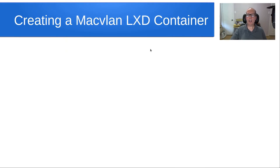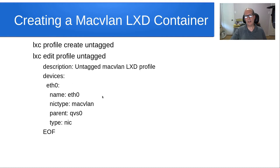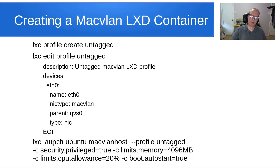To create a Mac VLAN LXD container, create a profile called 'untagged' for the untagged network rather than a specific tagged VLAN. The configuration looks very similar — same parent interface, but with NIC type set to macvlan. Then launch with 'lxc launch ubuntu', naming the host mac-vlan-host and specifying the untagged profile with the same switches used on the bridge container. Now let's see how this is done live.